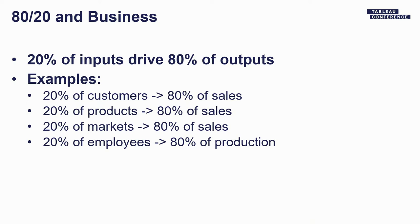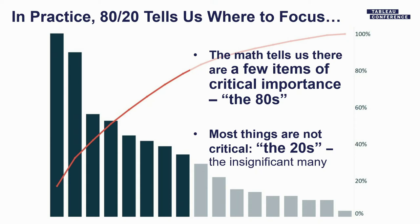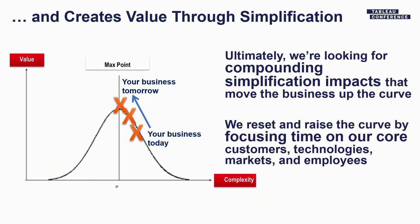So how does 80-20 actually apply to business? With the Pareto principle, 20% of inputs drive 80% of outputs. In business, 20% of customers typically drive about 80% of sales. On the product side, about 20% of products or SKUs are usually responsible for about 80% of revenue. If you're a domestic business, 20% of your states will probably drive about 80% of sales. If you're global, 20% of regions will likely drive about 80% of revenue. And in the office, 20% of employees typically drive 80% of production.